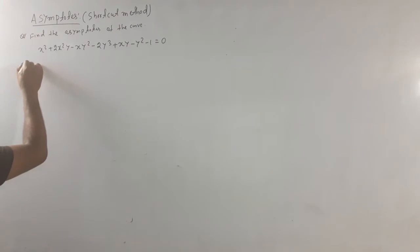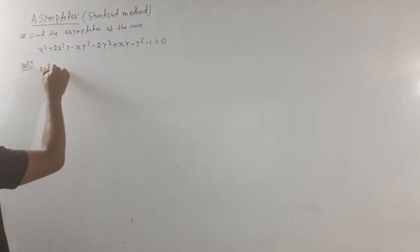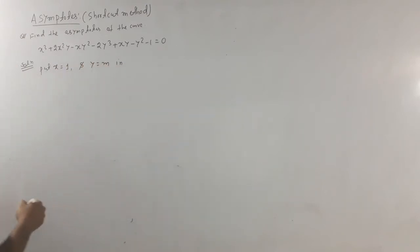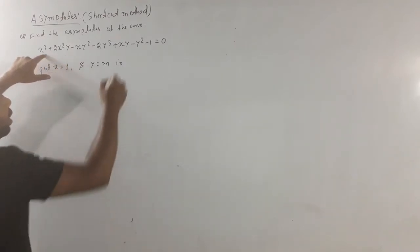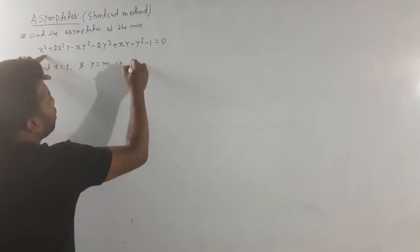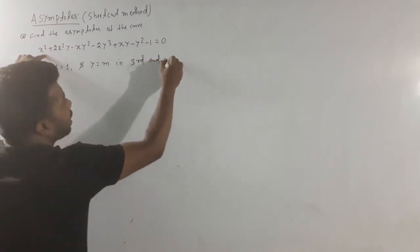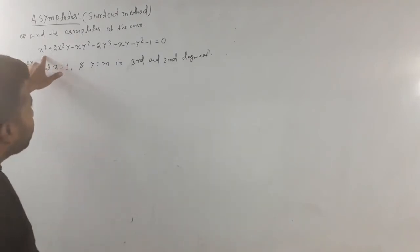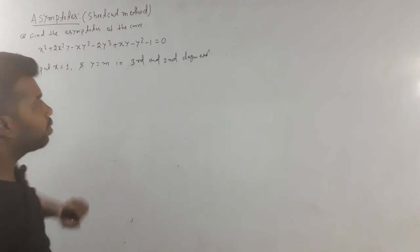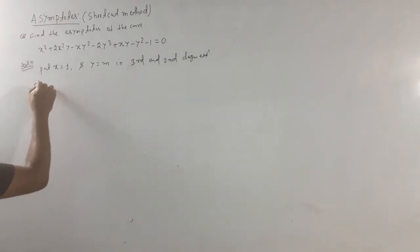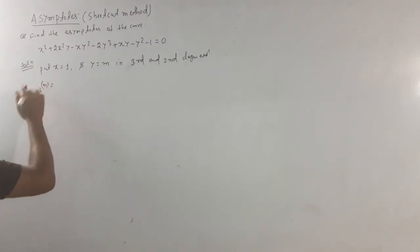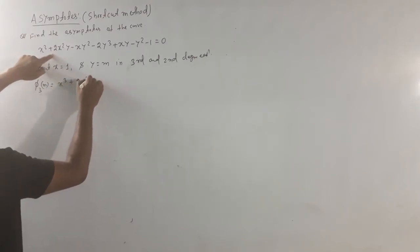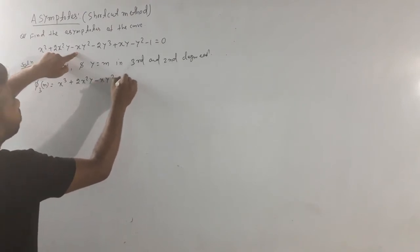First, we are going to put x equal to 1 and y equal to m in the equation. We start with the highest power, which is degree 3 (n=3). The equation is: x³ + 2x²y - xy² - 2y³. We substitute x=1, y=m to compute φ₃(m).